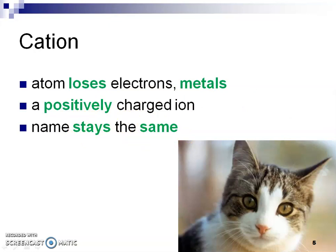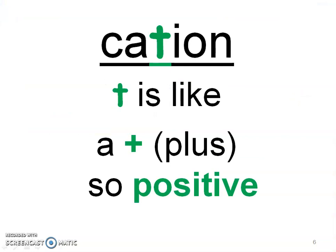It's really important to know that cations are going to have the same name as the element they come from. Another way to remember that a cation is positive: the word cation has a T in it, and that T looks like a plus sign, which is positive. So cations are the positive ions, coming from metals because they are losing electrons.